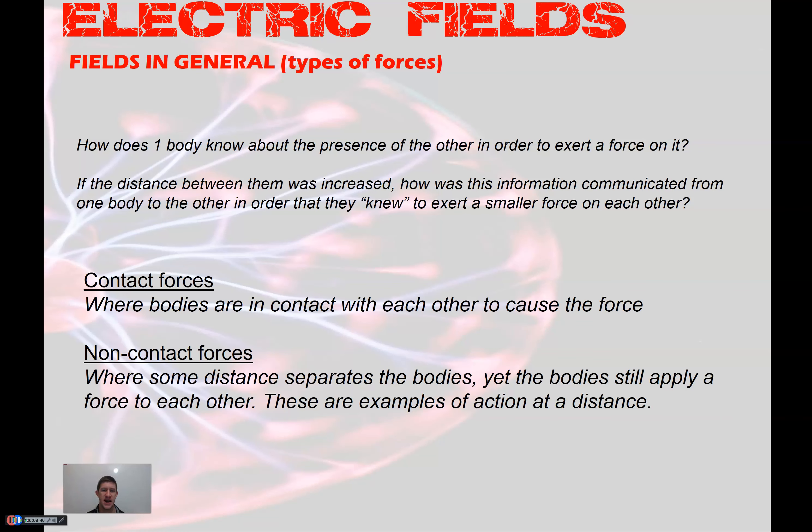The direction of field lines is the direction of the force on a small positive test charge — an object with a very small charge that won't significantly affect the source field. A positive test charge placed on a line near a positive source charge will be pushed away; near a negative charge it will be pulled inward. Field lines will never cross each other, and in a uniform field they are evenly spaced, signifying constant field strength.